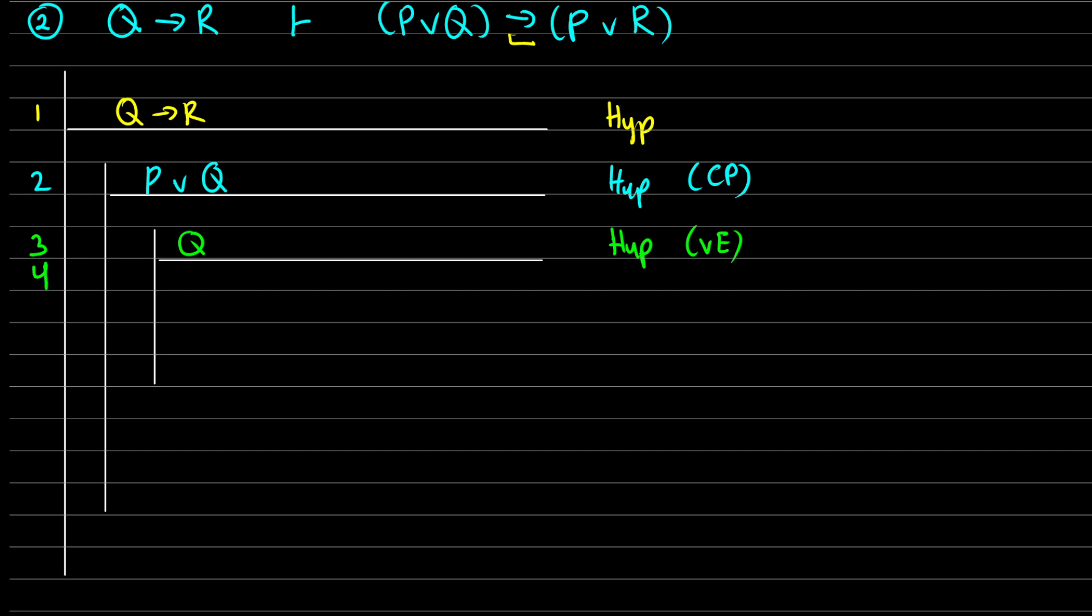Okay. Well, from line one, we had that we had Q arrow R as an assumption. So I'm going to reiterate that from line one. Now, using modus ponens on line three and four, since I have Q and Q arrow R, I can get R out of it.